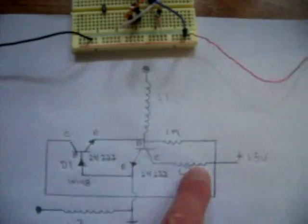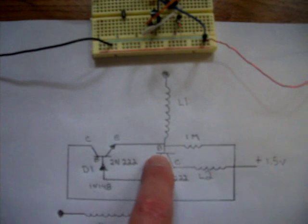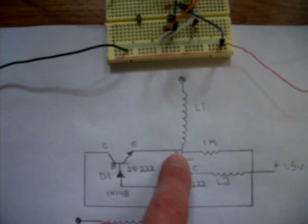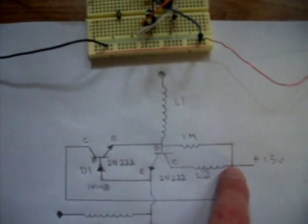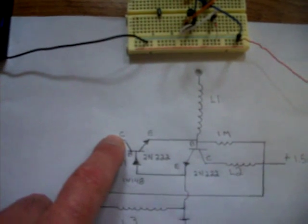Here's the positive side going through this primary coil, that's a five turn pancake coil, to the collector of this first transistor. It also goes through this one meg resistor to the base of the first transistor, and goes around to the collector of the second transistor.